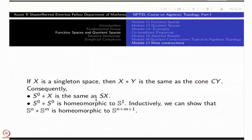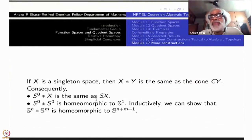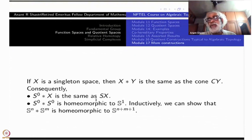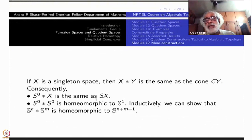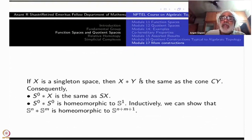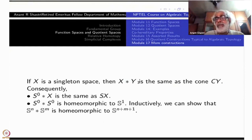Suppose X is a singleton space. Then X cross I cross {point} is just X cross I. At T=0, all of X is identified to a single point, giving a cone shape. At T=1, there is already only one point — so there is no further identification needed. Therefore X★{point} is just the cone CX. This is one of the reasons why even a single point gives not X but CX. So if you want the star operation to have an identity, you would take Y as the empty set — define X★∅ = X by convention, though this doesn't follow logically from the product (since the product with empty set is empty).